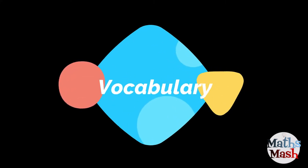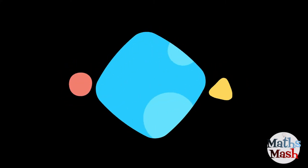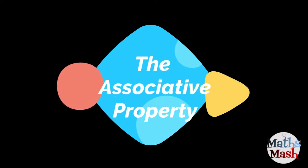Vocabulary. Our first vocabulary word is the associative property. Well, that's what this video is about. So, by the end of this video, you should understand what the associative property is.